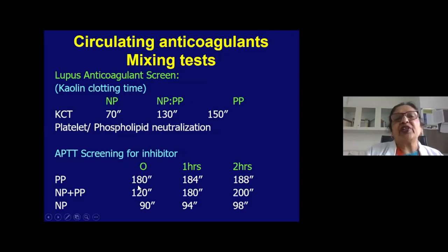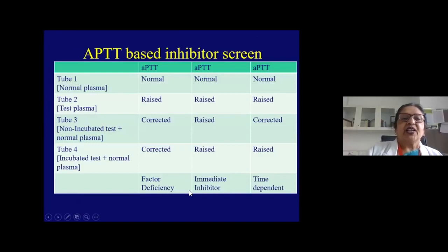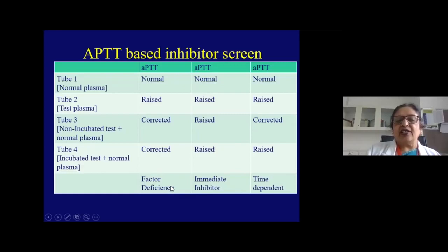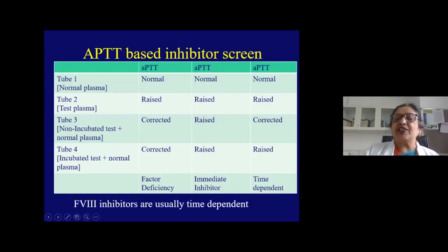In lupus anticoagulant mixing tests, there is absence of APTT correction when normal plasma is added to patient plasma, which can be confirmed with platelet neutralization test. For the inhibitor screen: 1:1 mix of normal and test plasma is assessed immediately and after incubation. If APTT corrects, it is factor deficiency. If not corrected immediately, it is an immediate inhibitor. If corrected when not incubated but not when incubated, it is a time-dependent inhibitor — typically seen with factor 8 inhibitors.